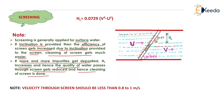The velocity before the screen is u and after the screen is v. The formula for head loss is: HL = 0.0729(v² - u²). The velocity v is greater than the velocity u.